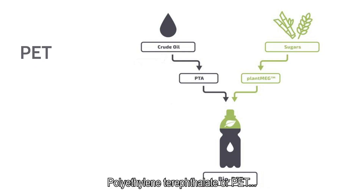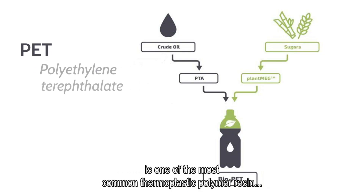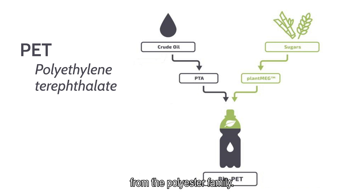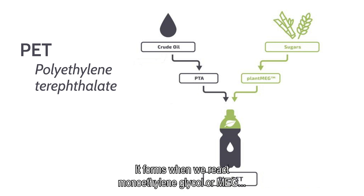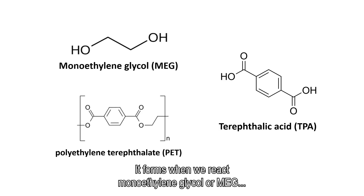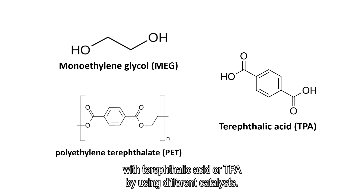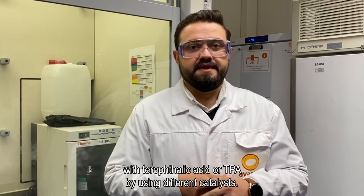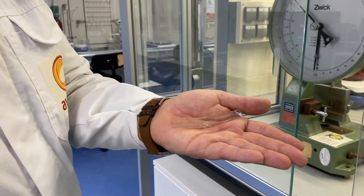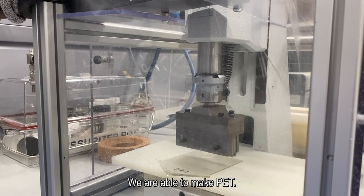Polyethylene terephthalate, or PET, is one of the most common thermoplastic polymer resins from the polyester family. It forms when we react monoethylene glycol, or MEG, with terephthalic acid, or TPA, by using different catalysts. We are able to make PET.